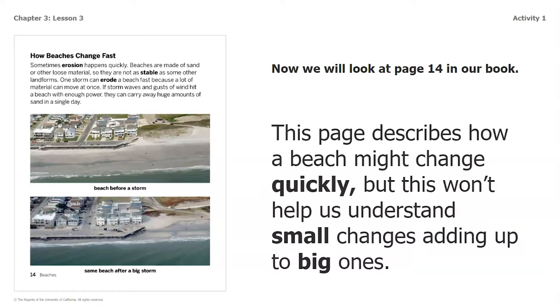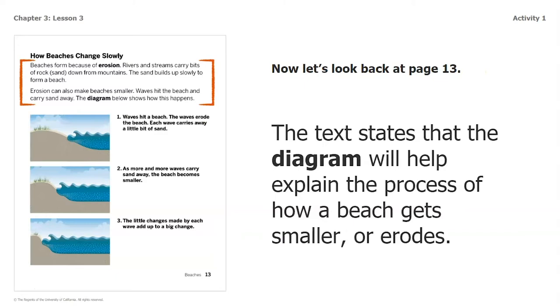Now we're going to look at page 14, where the heading says how beaches change fast. That gives me an idea about a way a beach might change quickly, but this won't help us understand small changes adding up to big ones, so I don't need to read this page to answer the question in my chart. Let's look back at page 13, because this is the page I'm going to use when filling out the chart in my packet, since it helps me figure out how small changes can add up to a bigger change.